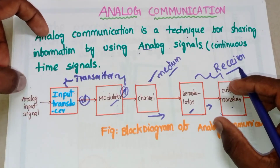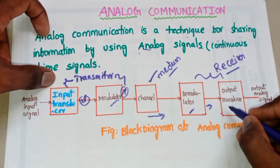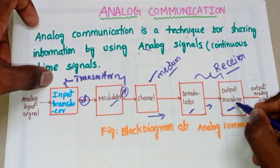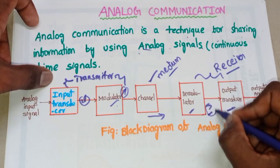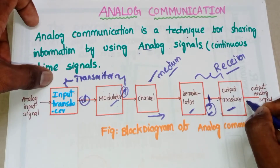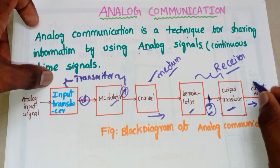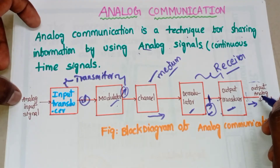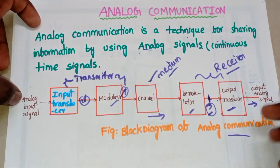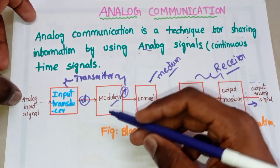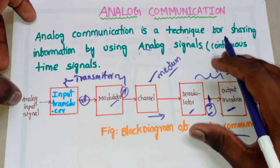After demodulation, the signal is passed to the output transducer, which performs the exact reverse operation of the input transducer — it converts the electrical signal back into the original voice or audio signal. At the output we have the output analog signal, which is the recovered voice signal. This completes the block diagram of analog communication. In later videos we will go through each block — modulator, channel, and demodulator — in detail.